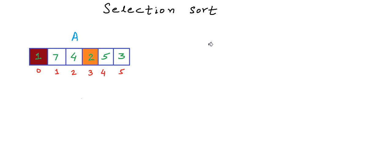The minimum in the range 1 to 5 is 2 at index 3. Now, 2 deserves to be at position 1. So, what we can do is, we can swap 2 with the element at position 1, which is 7. This is how things will look after swapping. So, second minimum goes at second position, which is index 1.